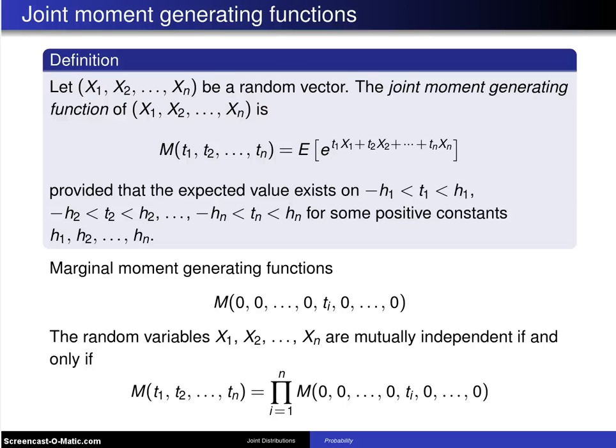So far in this section on multivariate distributions, we have defined multivariate random variables and we have also defined their probability mass functions and probability density functions. The cumulative distribution function has been defined, a marginal distribution has been defined, a conditional distribution has been defined, and we have looked at expected values. We have not yet looked at moment generating functions and that is what this slide is about.